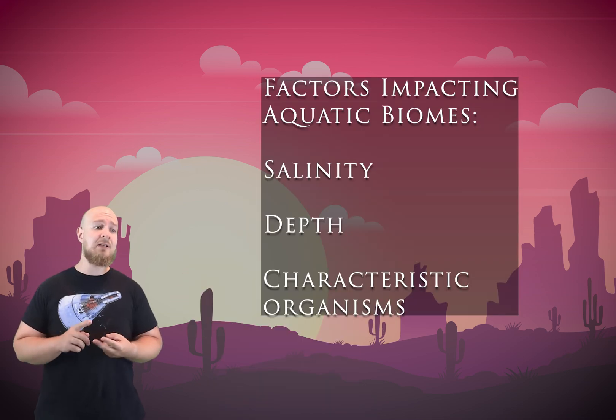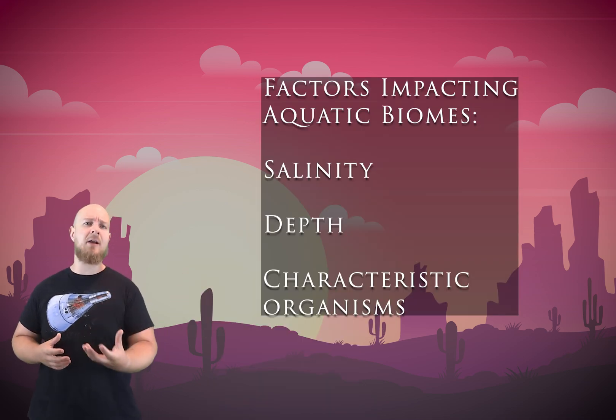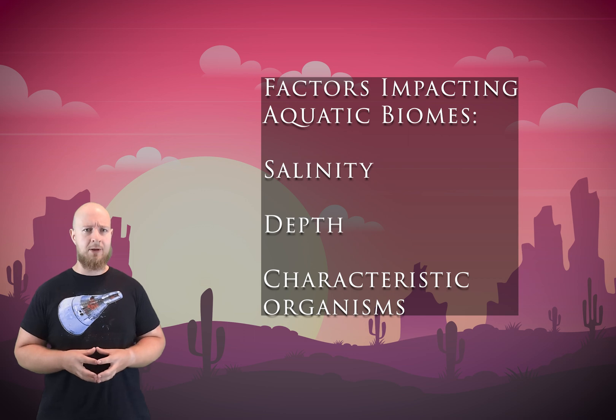All the things we just talked about are terrestrial biomes. Scientists have classifications for aquatic biomes as well, but those aren't particularly geographically bound. Rather, they're defined by salinity, depth, and the characteristic biotic communities in that body of water. There are two main categories for aquatic biomes: freshwater and saltwater, or marine biomes.